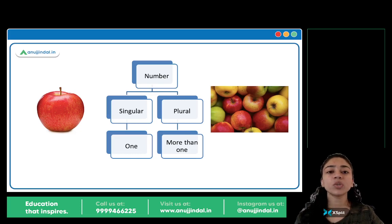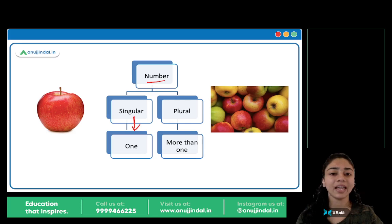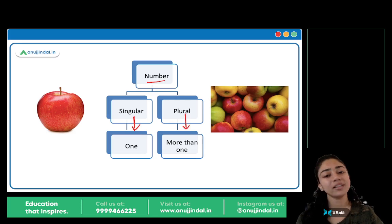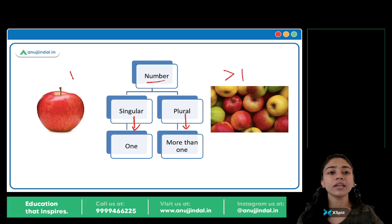So, singular, plural kya hai? Basically, numbers hai. Singular ka matlab hai one, ek, and plural hai more than one, ek se zyadha. One apple, many apples — more than one. Singular, plural.